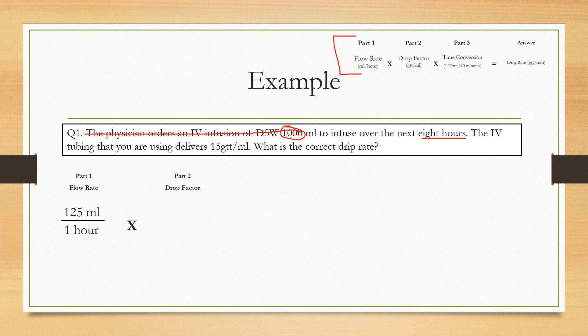The next part is the drop factor. So the drop factor here, as it shows you, is 15 drips per milliliter. So every 15 drops, it adds up to a total of one milliliter of fluid.